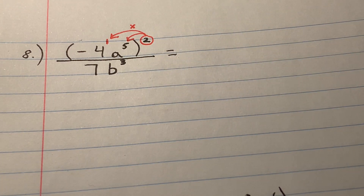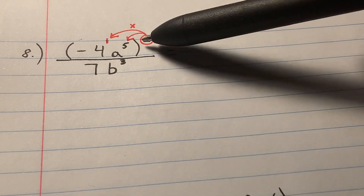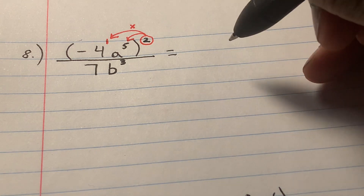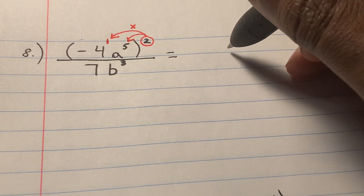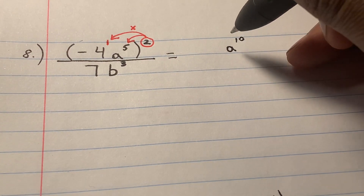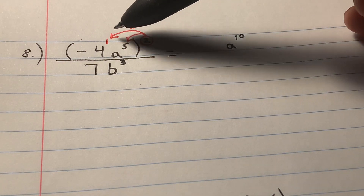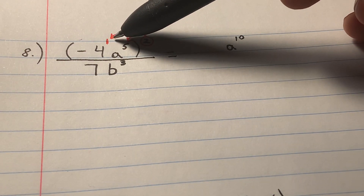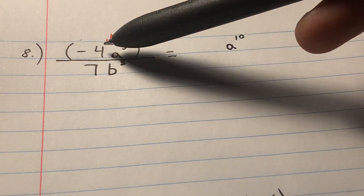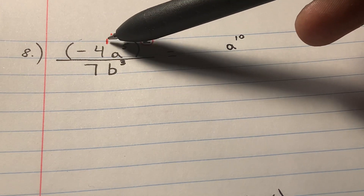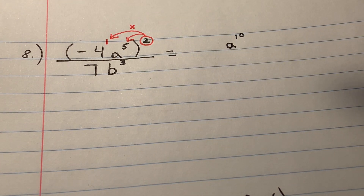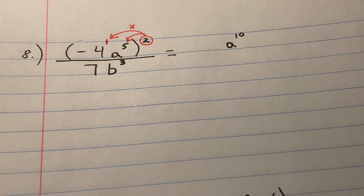Let's do that. We have two times five, which makes it a to the tenth. Now here we have two times one, which is of course two. However, there might be some confusion at this point: does this become negative four to the second power without parentheses, or negative four to the second power with parentheses? It's a very important question to answer.